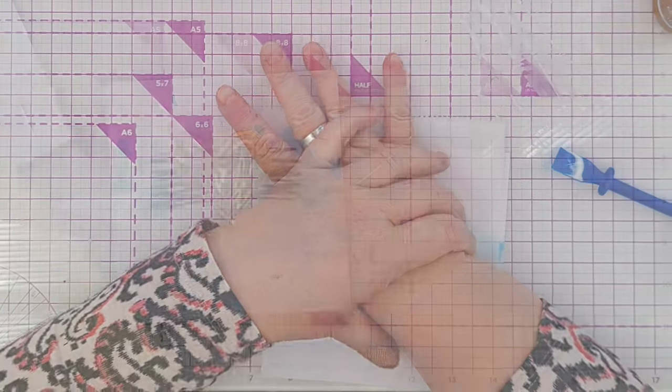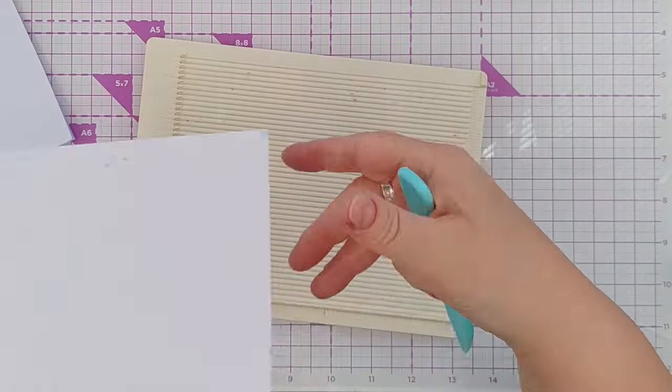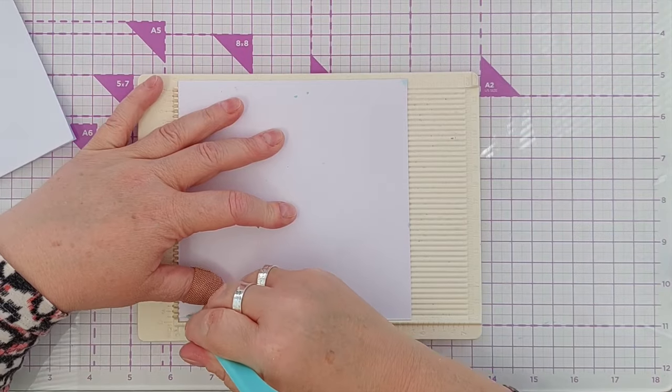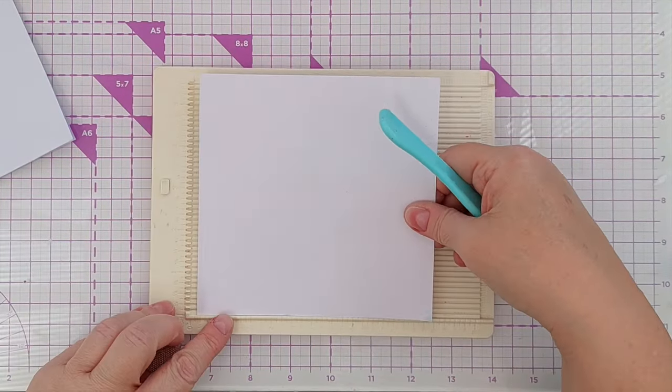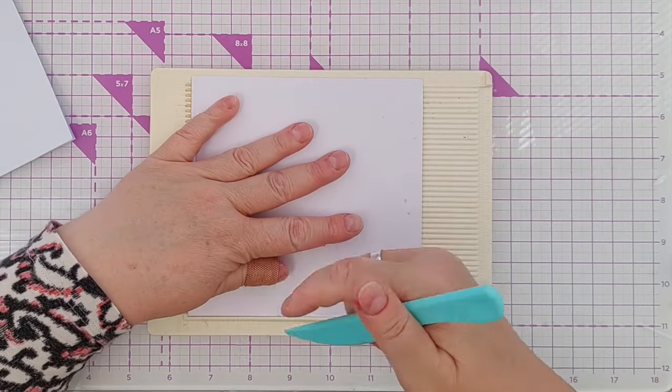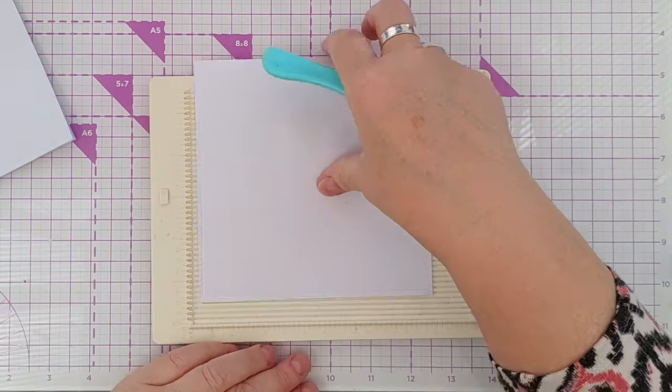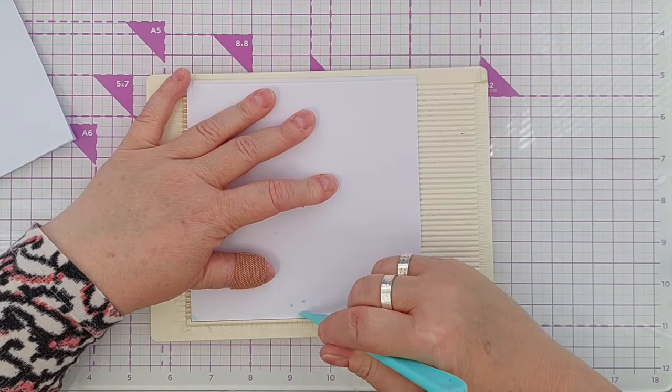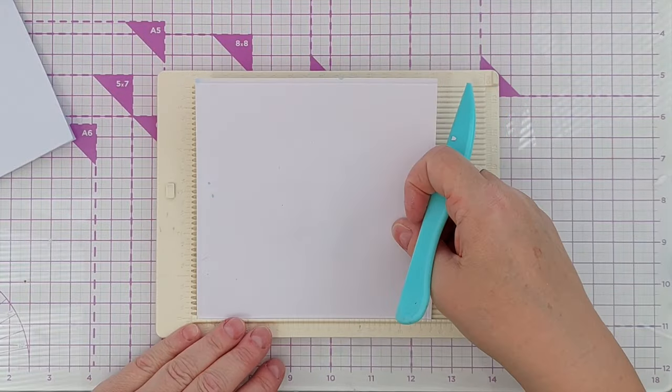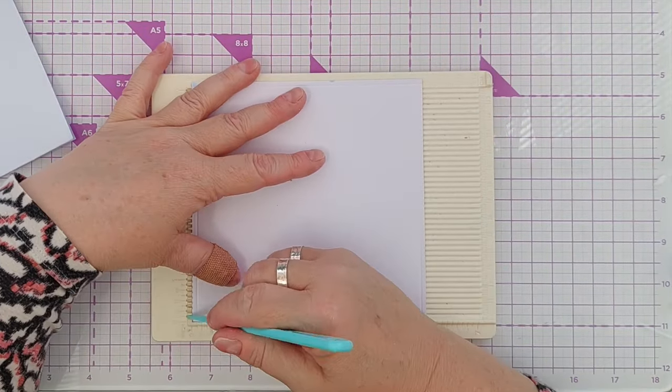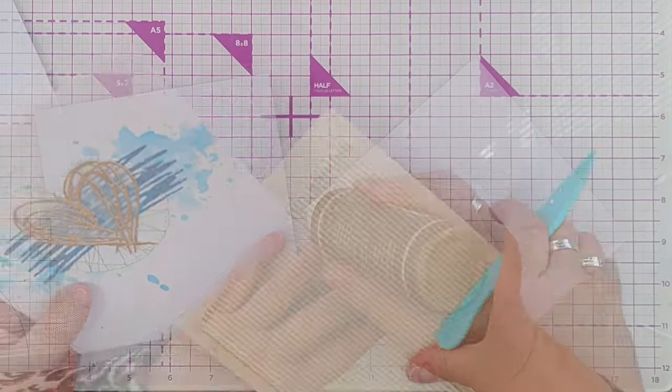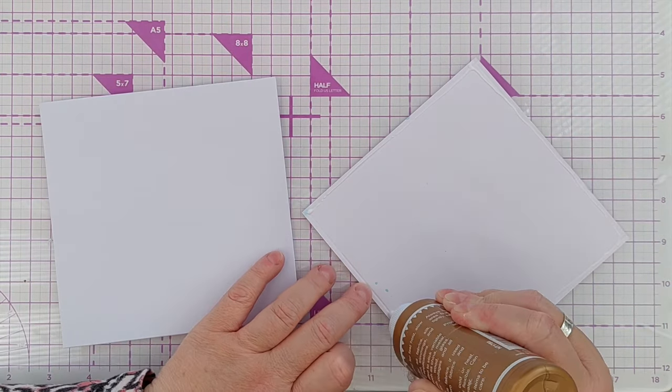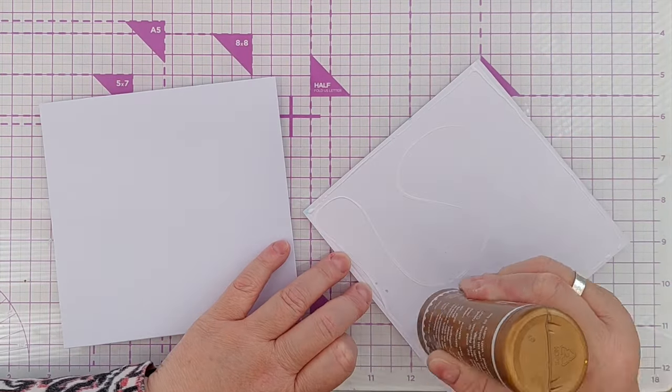I wanted to give the edge of my cardstock a bit of definition, so I used my scoreboard to add a scored line along each edge. I flipped it over so that I was scoring on the back, which meant that the front had the raised part of the scored line. I then added glue to that and stuck it to a 6 by 6 inch card blank. There is a tiny little white border which I think again helps set off the card.